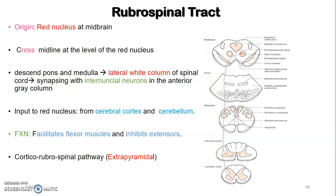Looking at the diagram, from the red nucleus fibers cross the midline at the same level, descend through the pons and medulla, then the rubrospinal tract is found in the lateral white column of the spinal cord, where it synapses with interneurons in the anterior gray column. These control and facilitate flexor muscles while inhibiting extensors. The second-order neurons run from the ventral horn to the specific flexor muscle.